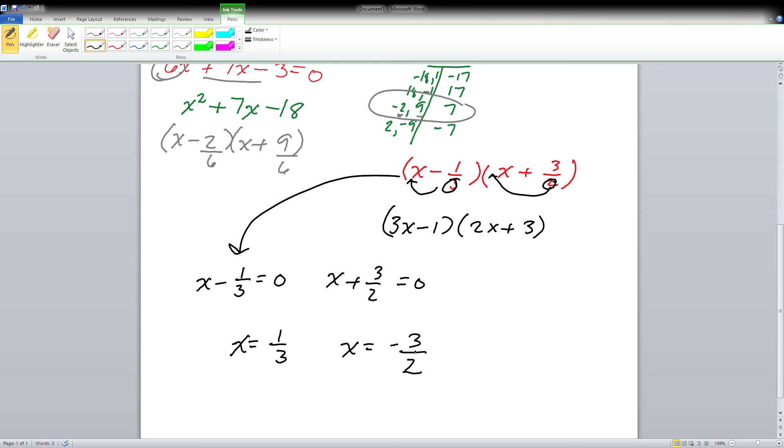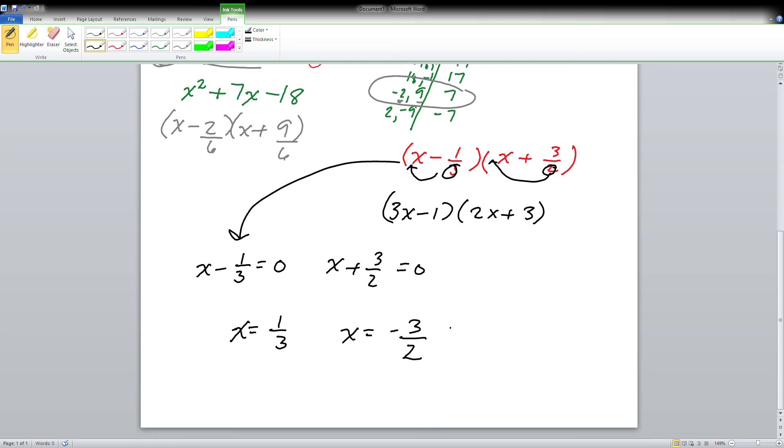I'm not going to do that, however, because I'm actually solving this, so I can just take this factor and set it equal to 0. x - 1/3 = 0 and x + 3/2 = 0.